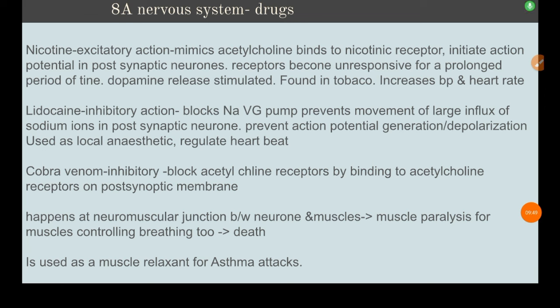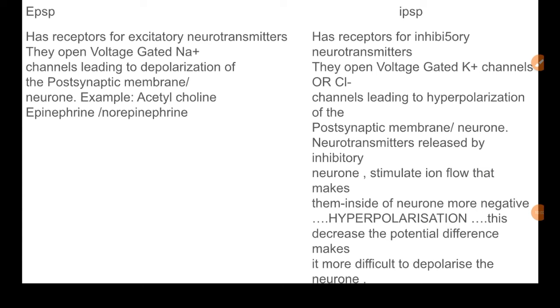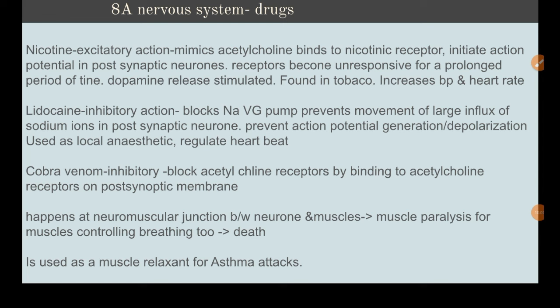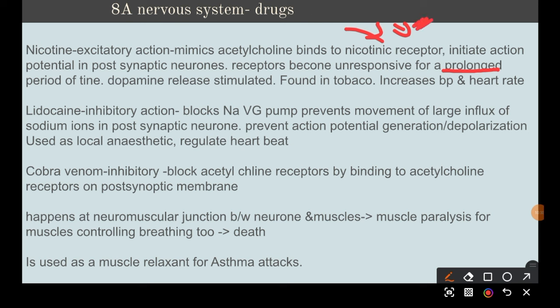Now, drugs and their effects on the nervous system. Nicotine, found in tobacco, has an excitatory action — it mimics acetylcholine and binds to nicotinic receptors, a type of acetylcholine receptor, initiating an action potential in the post-synaptic neuron. Unlike acetylcholine, nicotine cannot be rapidly hydrolyzed, so it stays in the receptor for a prolonged period. It also stimulates the release of dopamine, increasing blood pressure and heart rate.